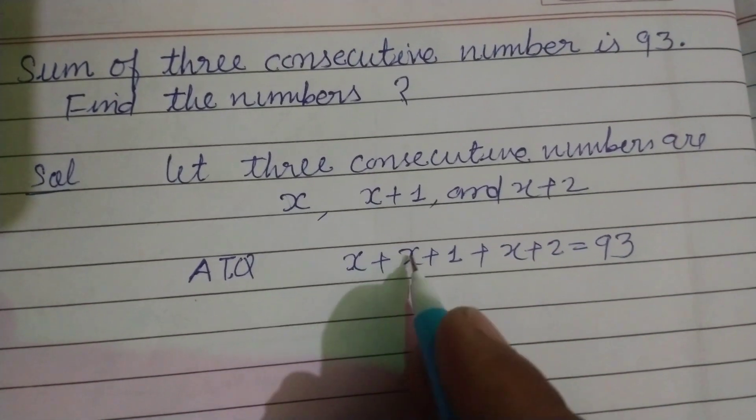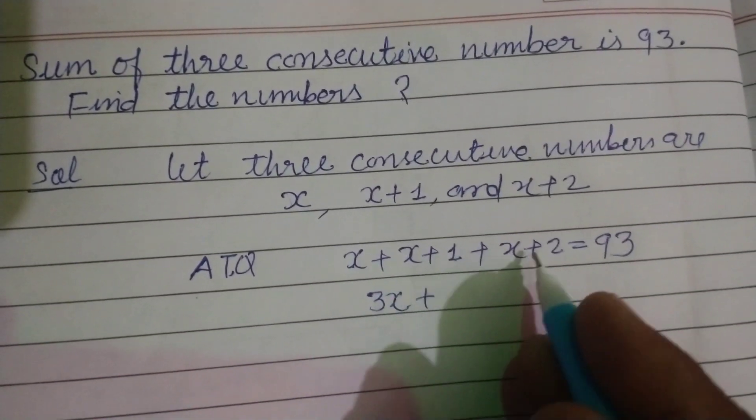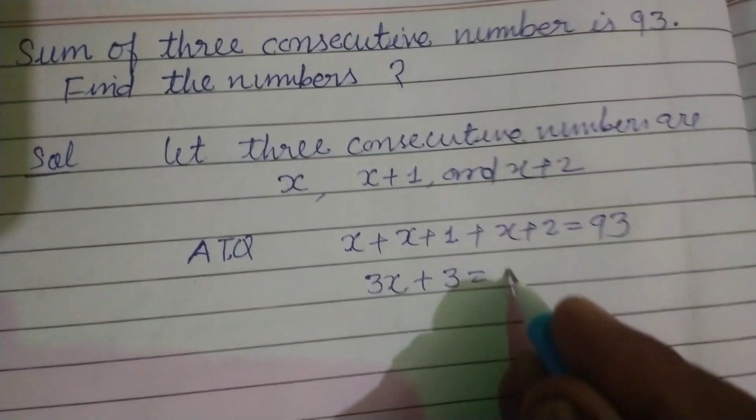Here, x plus x plus x equals 3x. 1 plus 2 equals 3. So 3x plus 3 equals 93.